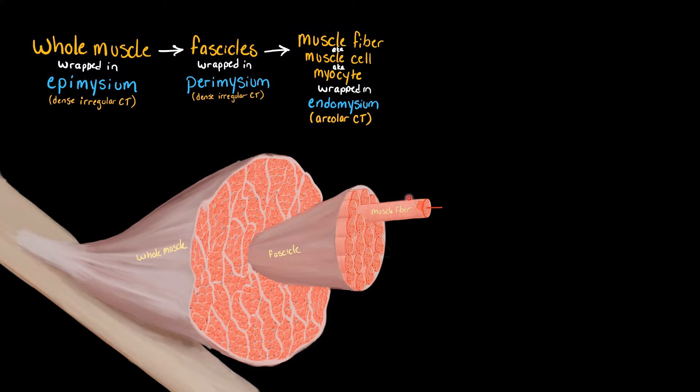Now, because these muscle fibers are cells, underneath the layer of connective tissue, underneath the endomysium, is going to be the cell membrane. In the muscle, we call the cell membrane the sarcolemma.